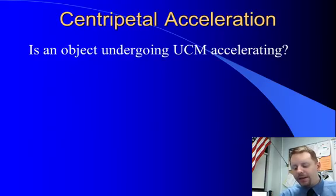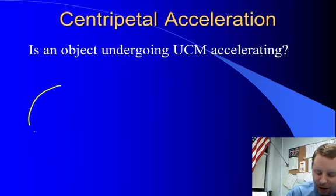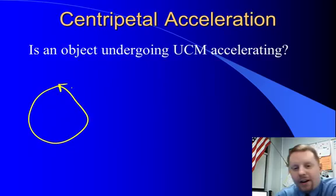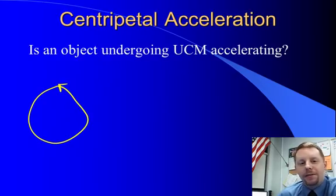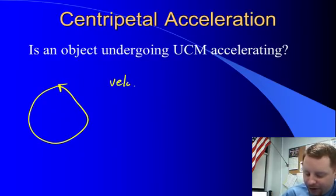Now, is an object undergoing Uniform Circular Motion accelerating? That's a bit of a tricky question. If an object's moving in a circle, even if its speed is constant, its velocity must be changing. Why? Because velocity is a vector. It has a direction. Remember, velocity is a vector.